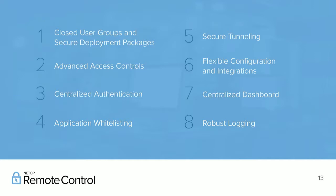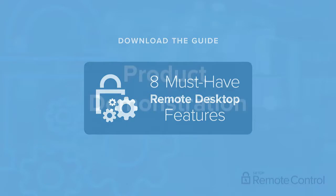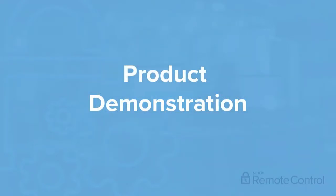Those are eight specific must-have features. It's easy to put them on a screen, but it really helps to show how they can be deployed. If you want a copy of those eight features with descriptions, you can download the guide directly from the webinar software or from our website. Once you've done that, we'll do a quick product demonstration to show how Netop Remote Control incorporates those features.